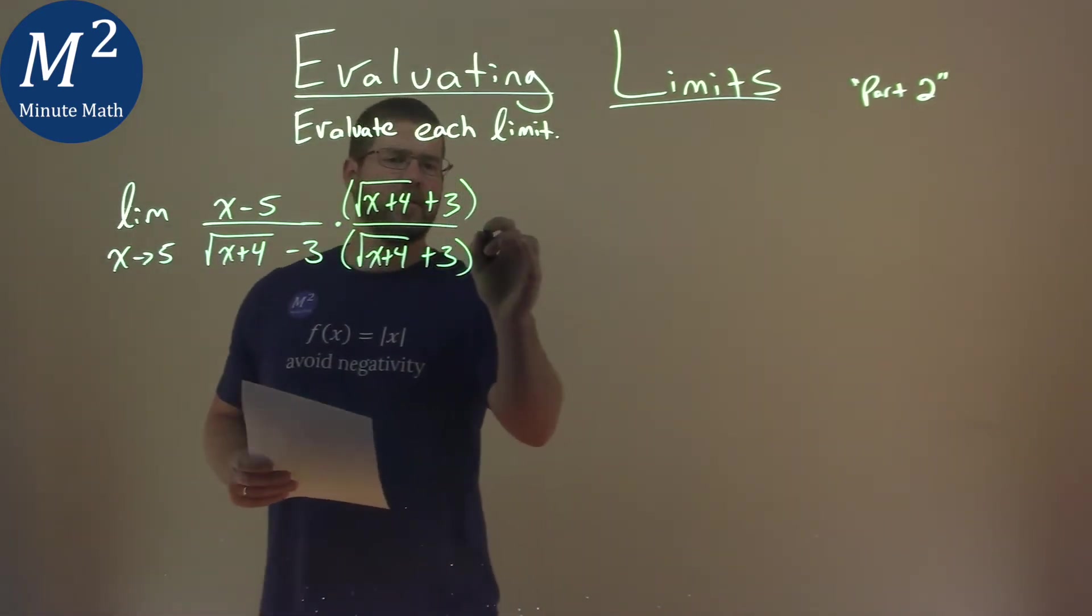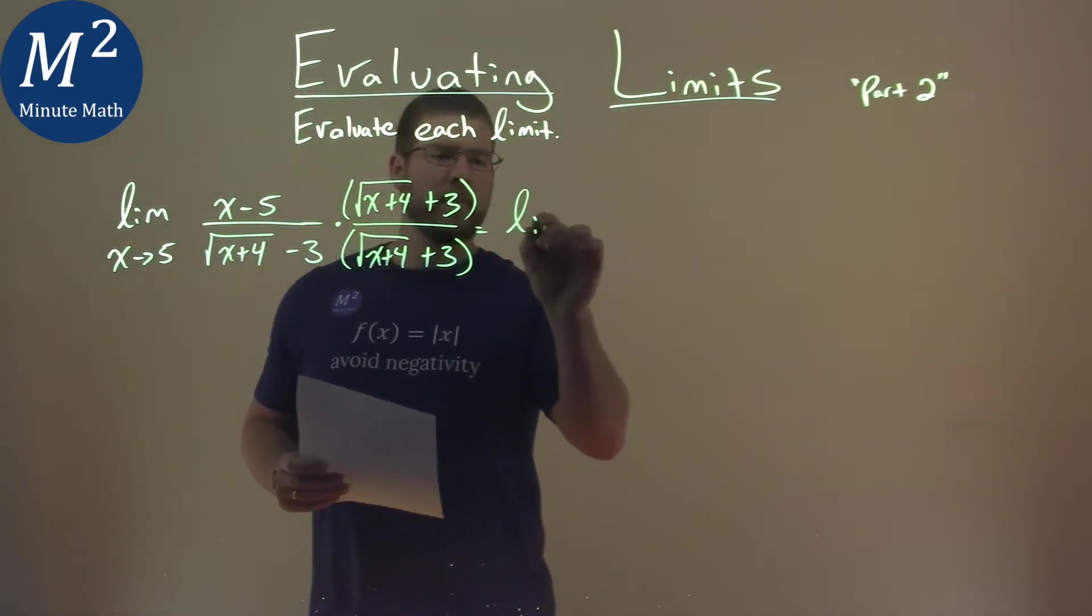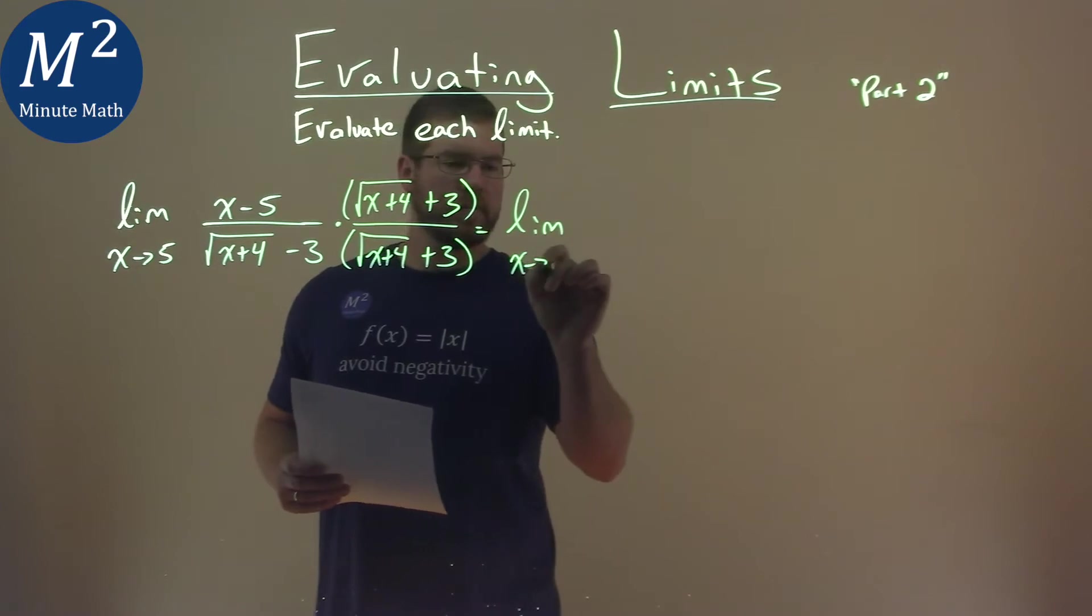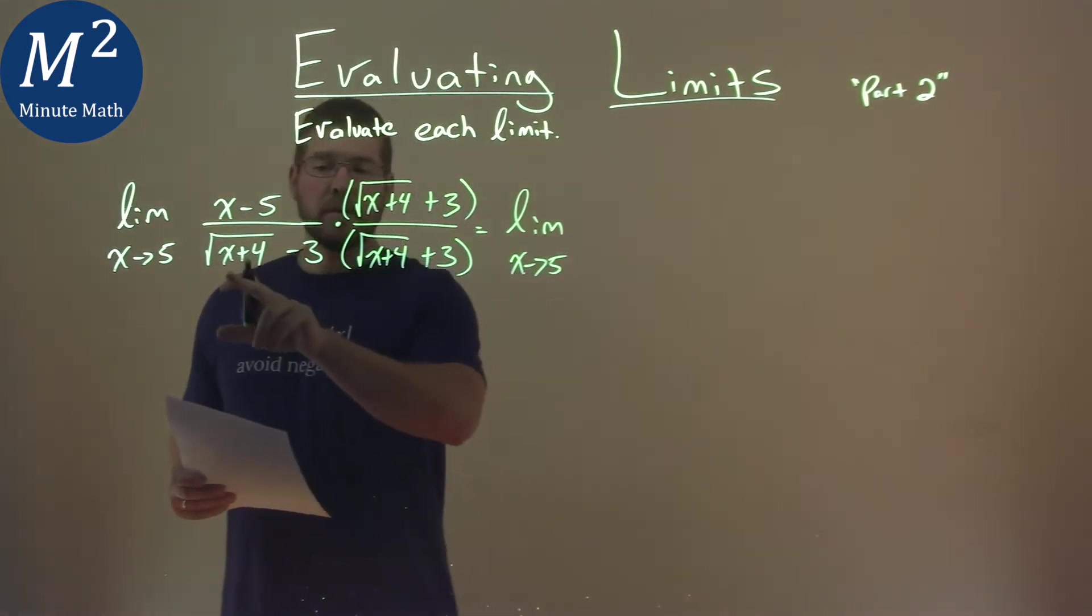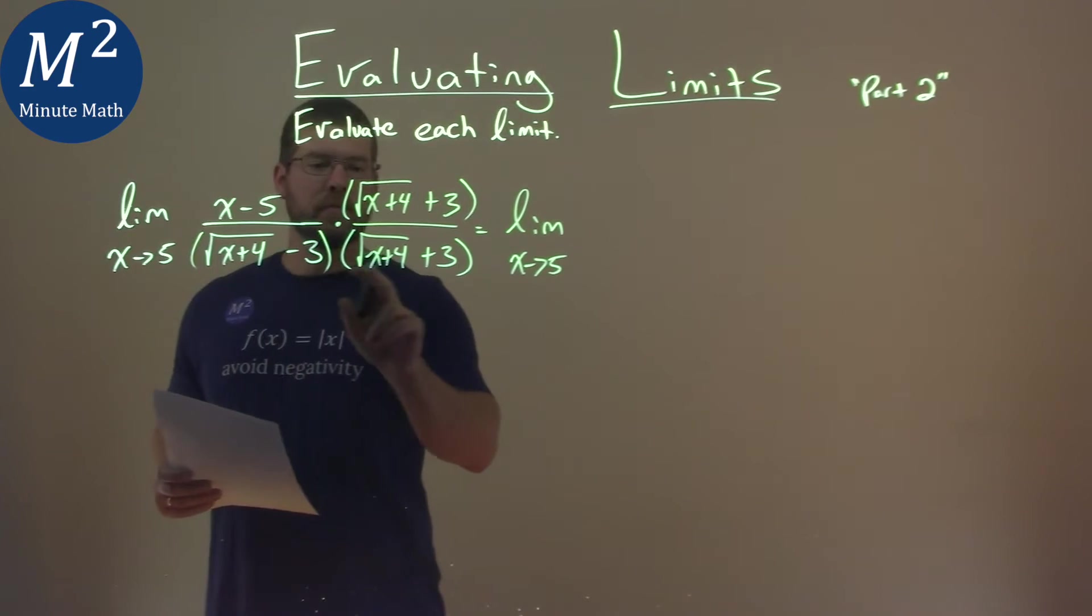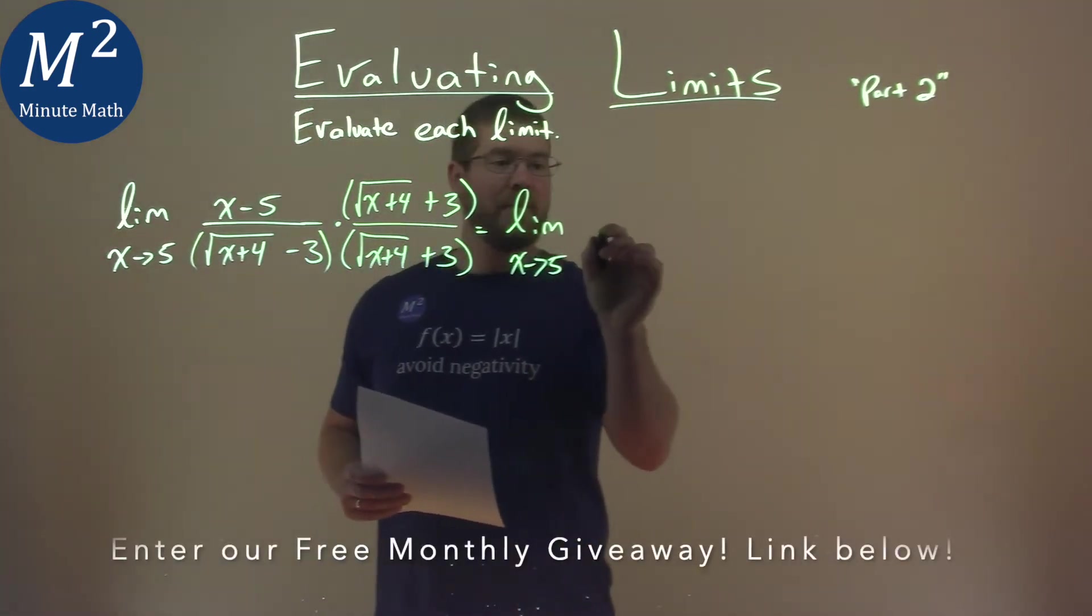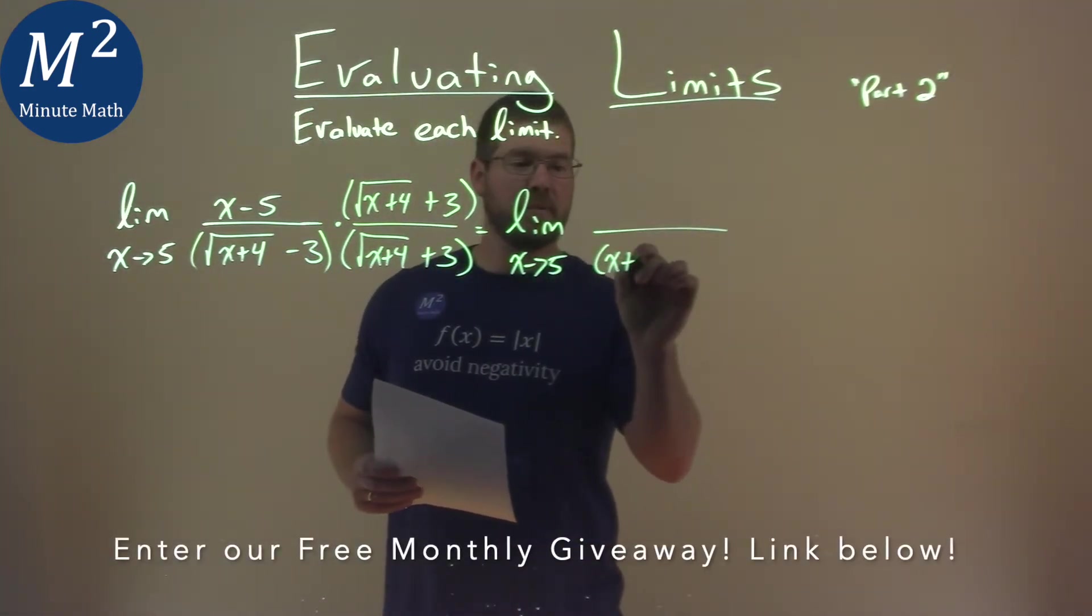And so what this allows me to do, I'm going to take the limit again, make sure we show this. For the denominator, we multiply the square root of x plus 4 times the square root of x plus 4, and that's just equal to x plus 4.